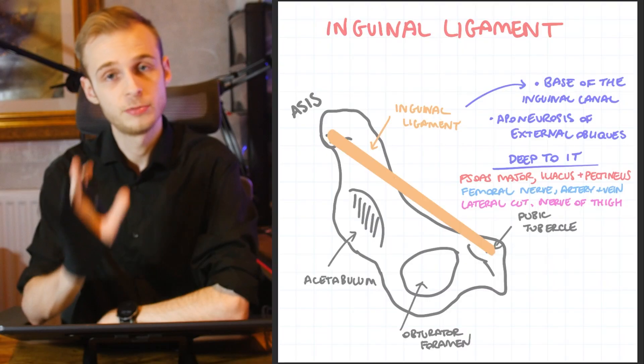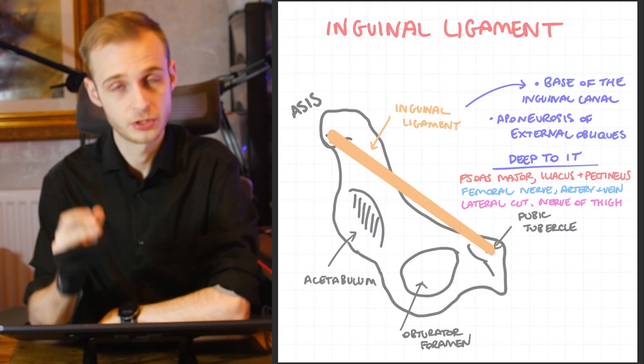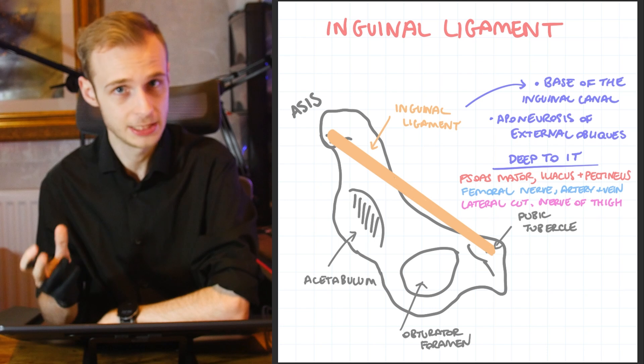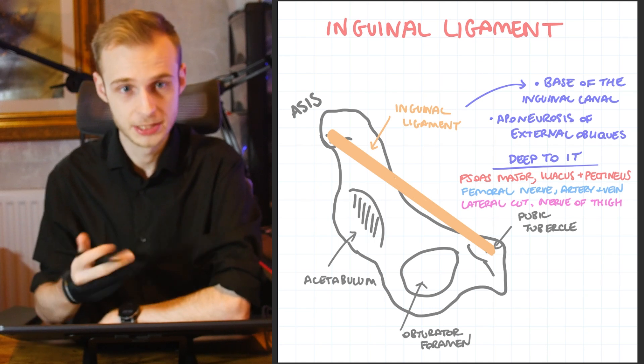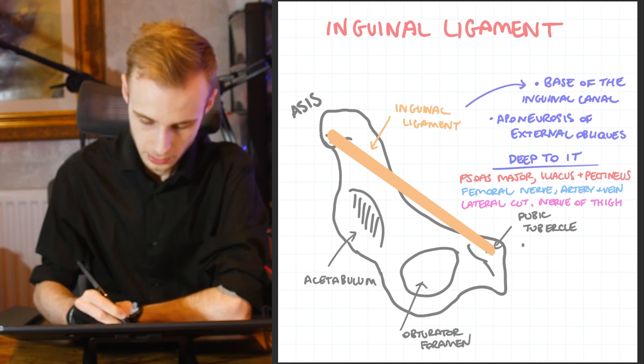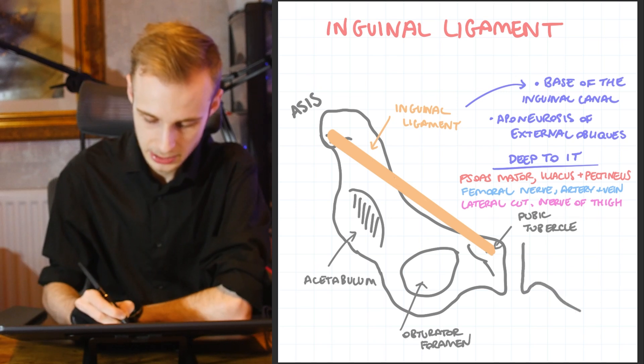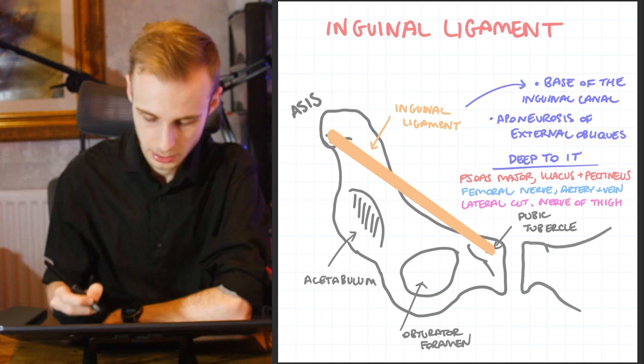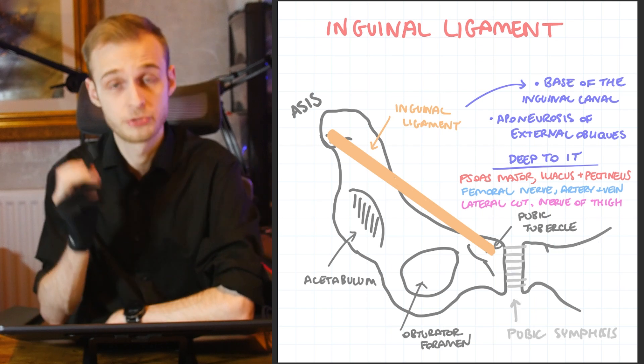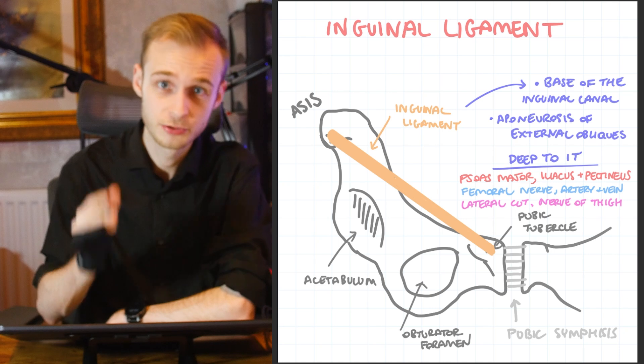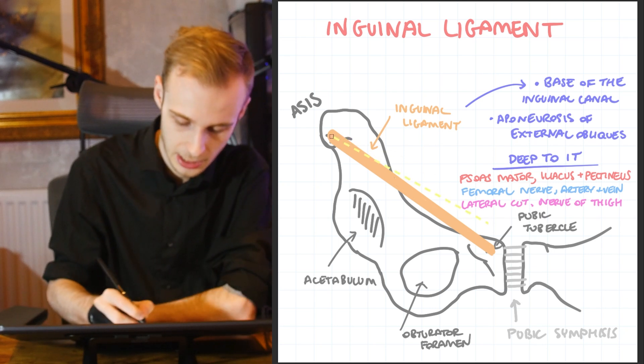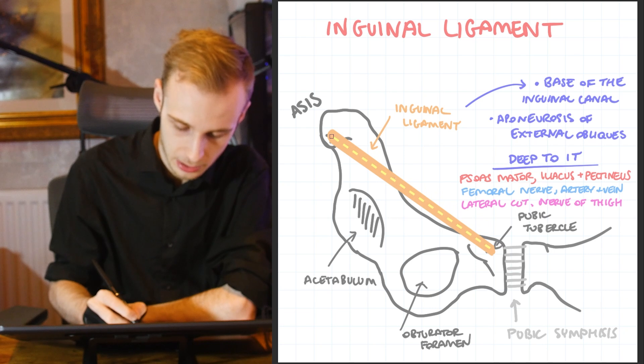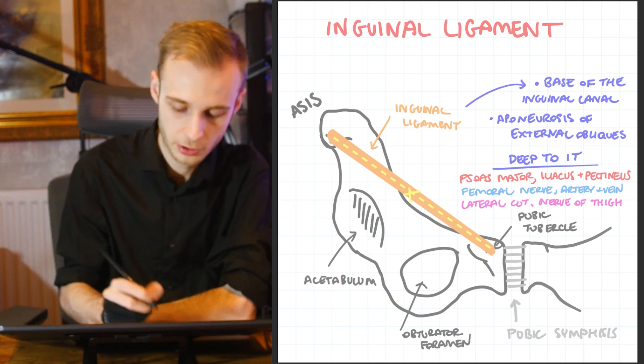Before we move on to talking about Hesselbach's triangle, there's one really important distinction that we need to make, and that is the distinction between the midpoint of the inguinal ligament and the mid inguinal point. I'm gonna need my gray back just for a sec because we need our pubic tubercle and pelvis on the other side.